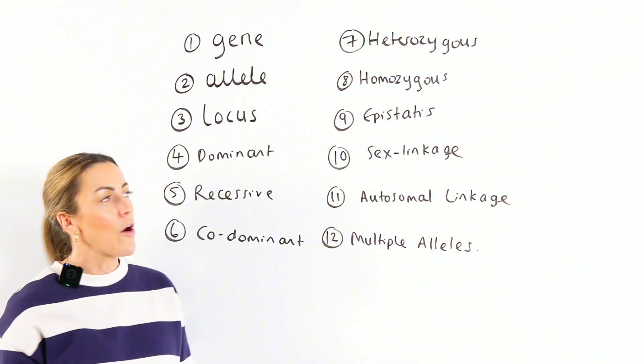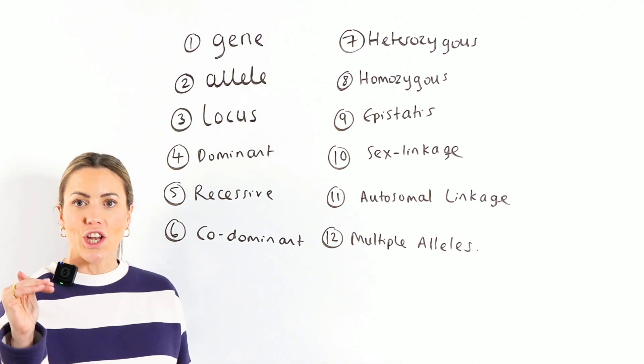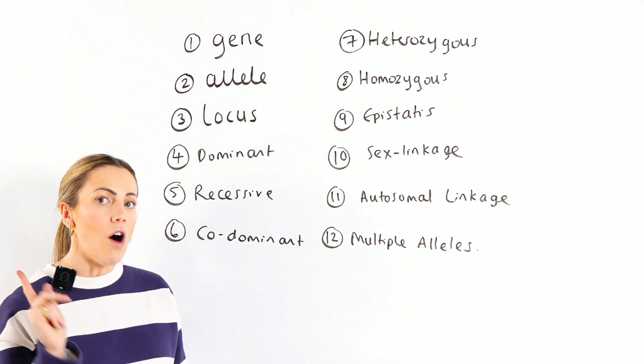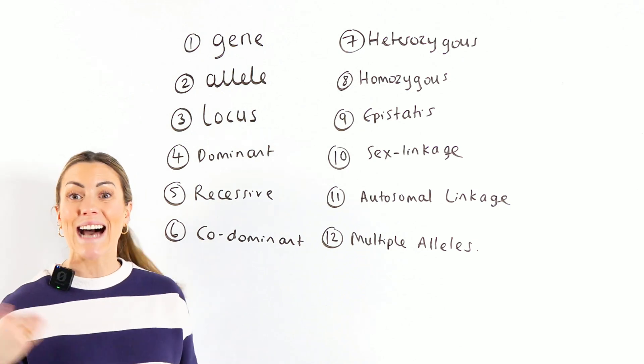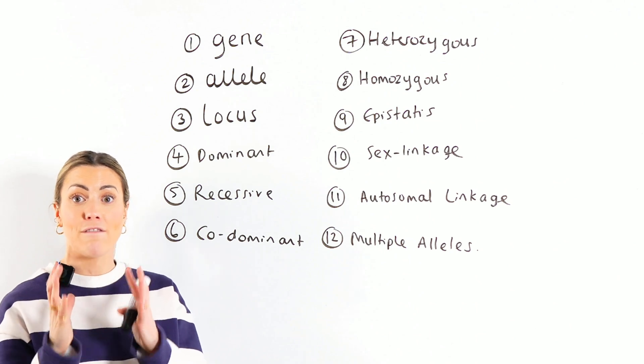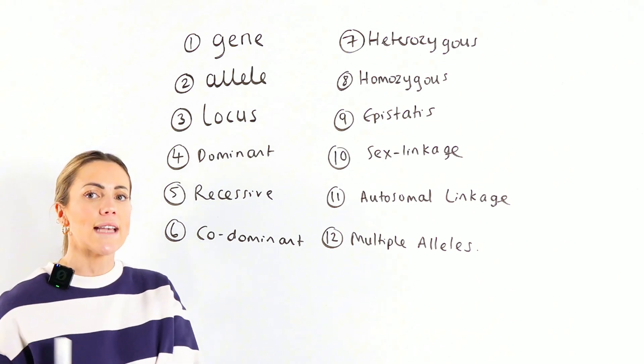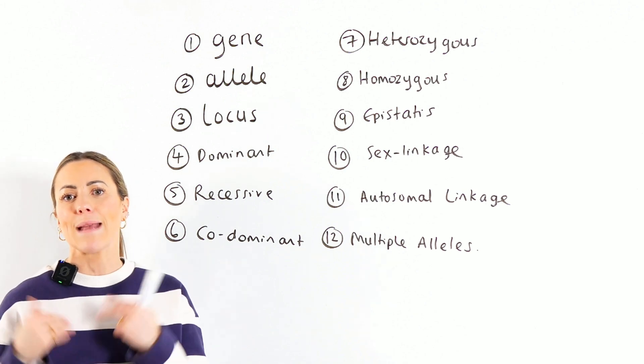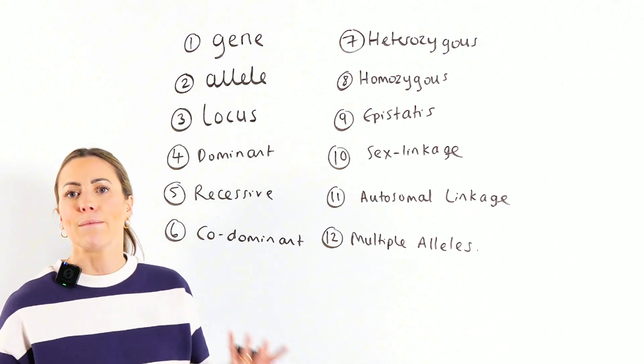Locus is another easy one. That's just the position of the gene on the chromosome. So each gene has a specific locus. And as I've just said, if you've got a homologous pair of chromosomes, they will carry the same genes and they will be in the same loci. They will have the same locus.